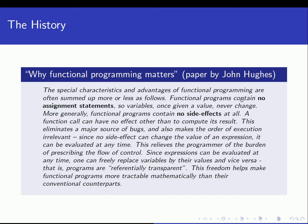John Hughes says functional programs contain no assignment statements, so variables, once given a value, never change. In functional programming languages, we don't have variables in the same sense as in imperative or object-oriented languages, where variables denote memory locations and assignment statements change the values stored in those locations. In functional programming languages, once a variable has been given a value, it never changes — so it really behaves like a constant. It's kind of a misnomer to call it a variable because its value never varies.